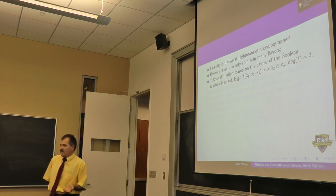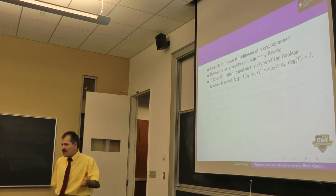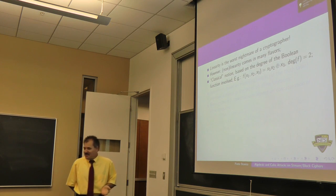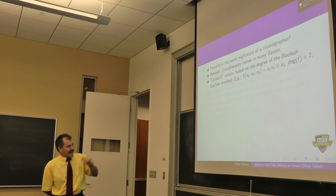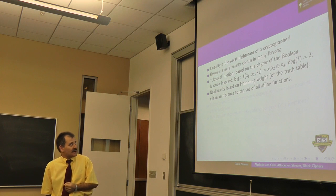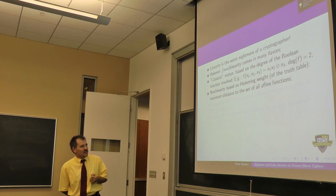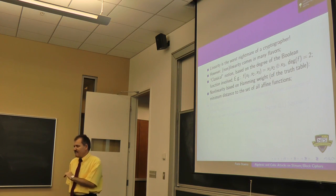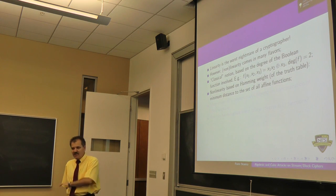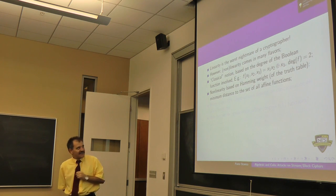After today's talk, you'll be able to recognize what a linear function looks like. Non-linearity comes in many flavors, one being the degree of the polynomial. If there is degree one, then it is linear or affine. Sometimes we use these interchangeably, although from a linear algebra perspective they're not the same. There is another notion based on the Hamming distance: the minimum distance to the set of all affine functions.